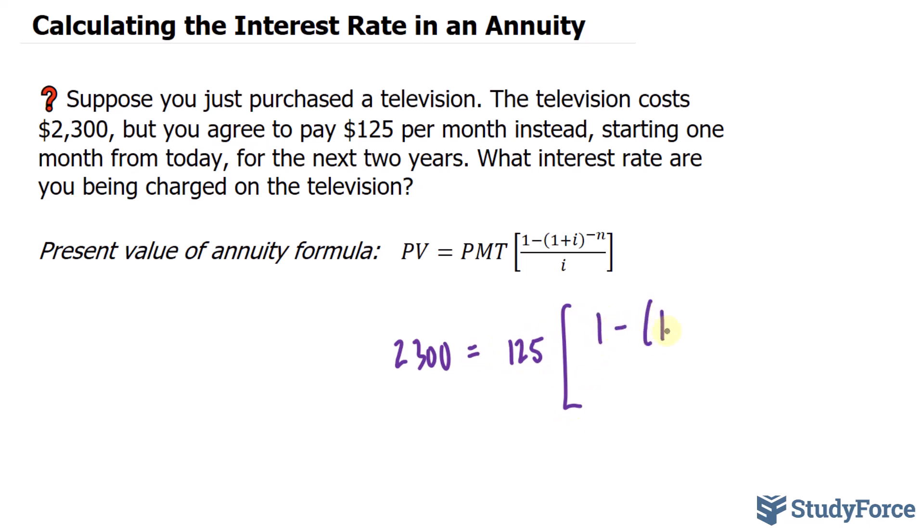One take away one plus, we don't have the interest rate per period, so I will be left as it is. And that's being raised to the power of negative n, where n represents the number of periods. Notice that we are paying into this annuity monthly, and it's for two years.